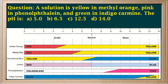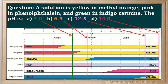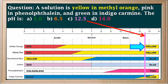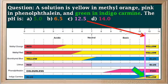Here's another multiple choice question. A solution is yellow in methyl orange, pink in phenolphthalein, and green in indigo carmine. Is the pH A) 5, B) 6.5, C) 12.5, or D) 14.0? Pause the video and try this question on your own, then resume to check your answer. To answer this, we draw vertical lines through the chart at all given pH values — 5, 6.5, 12.5, and 14. At a pH of 12.5, methyl orange would be yellow, phenolphthalein would be pink, and indigo carmine would be close to an equal mixture of blue and yellow, which is green. So the answer is C: the pH of this solution would be 12.5.